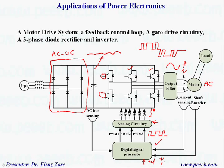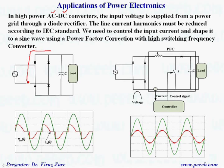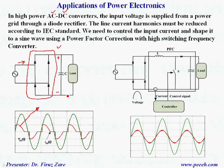In high power AC-DC converters, the input voltage is supplied from a power grid through a diode rectifier, with a capacitor across the output to regulate the voltage. This type of converter at high power injects significant harmonics into the system — the input current is not a sine wave and has significant harmonics. We must comply with the IEC standard. In this case we have two options: either using a passive or active filter. Passive filters are very bulky, expensive, and increase the size of the system. The other option is using power factor correction.